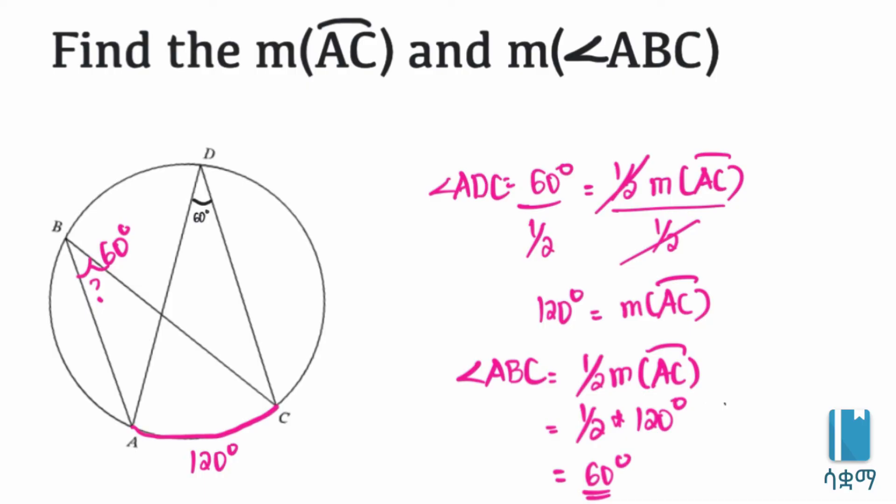This illustrates the theorem that inscribed angles subtended by the same arc are congruent. Both angle ABC and angle ADC are inscribed angles subtended by the same arc AC, so they are congruent.